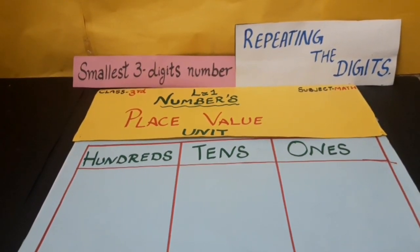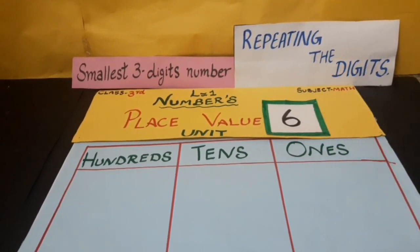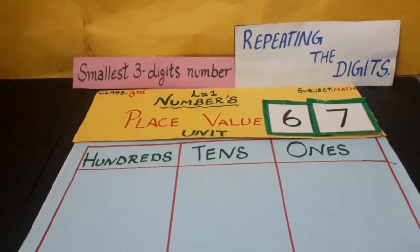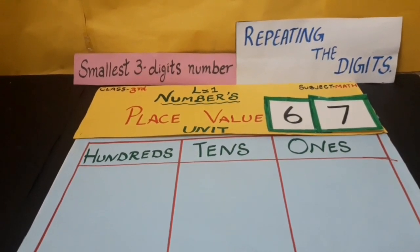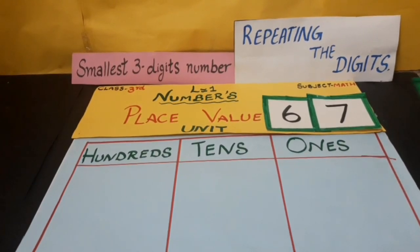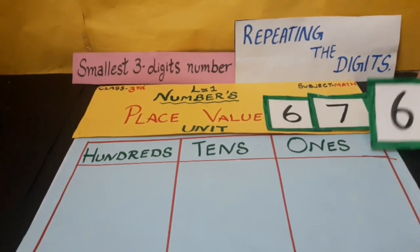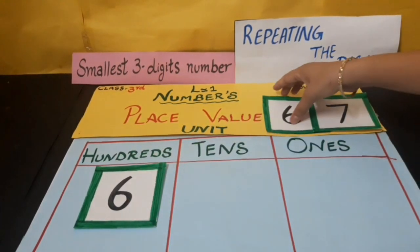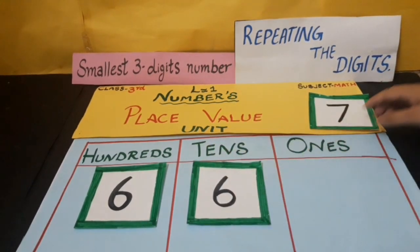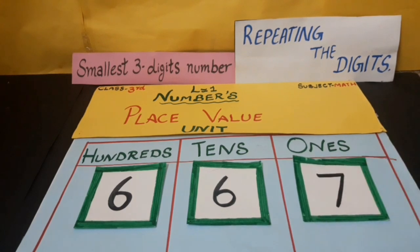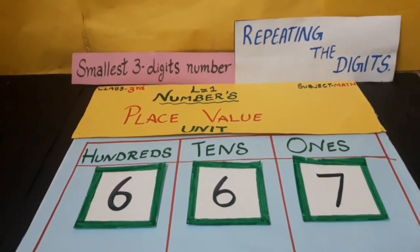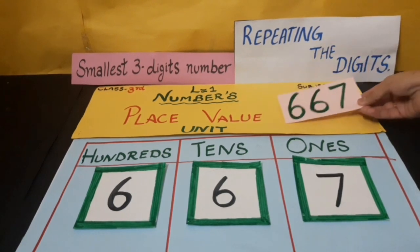Let's take one more example. The given digits are 6 and 7. Tell me, which is the smallest digit here? Very good — it's 6. So 6 will be repeated. To make the smallest 3-digit number by repeating the digit, we take 6 on the 100s place, another 6 on the 10s place, and 7 on the 1s place. See again — it's 667. We write 667 like this.